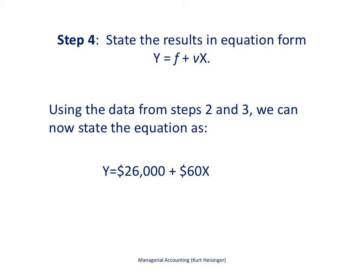Step 4 then is to take the information that we have from the first three steps and plug it into our equation, Y equals f plus vX. And again, some textbooks will use different terms here, but we are essentially doing the same thing across textbooks, and that is to state our estimate of mixed costs using this equation. So what do we know? We know that we have $26,000 in total fixed costs, that came from step 3, and we have $60 per unit for our variable cost. We plug those numbers in here, and now we can solve for Y, plugging in a value for X.